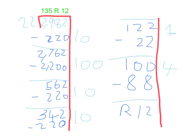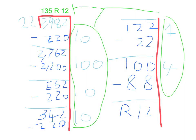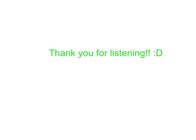There was a remainder of 12 because there were no more 22s in 12. And so I added all these up. And that made 135 remainder 12. Thank you for listening to my sharing problem.